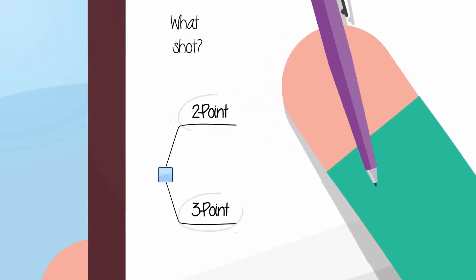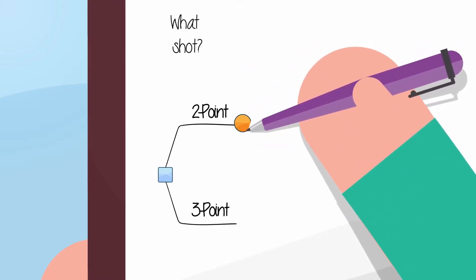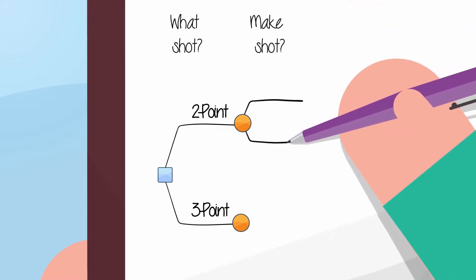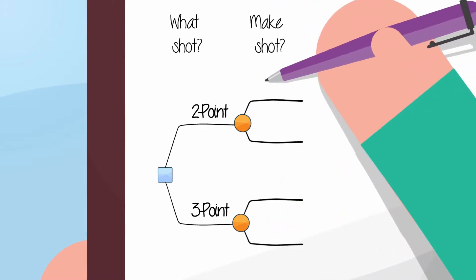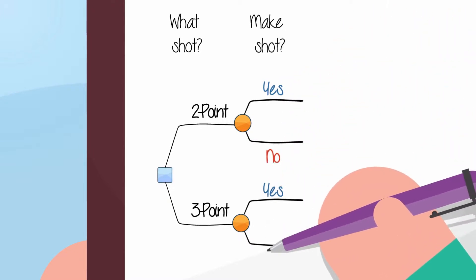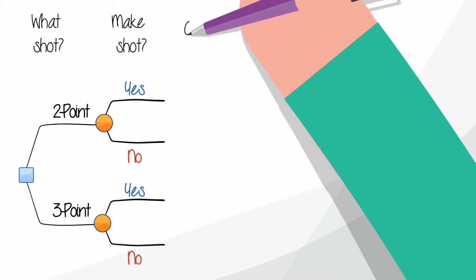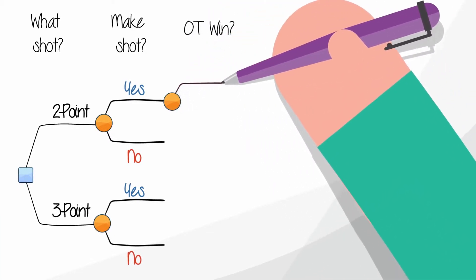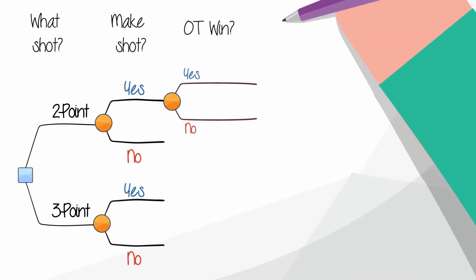In either case, you don't know whether you'll make the shot. Draw a circle to represent the uncertainty. And lines coming from the circle represent possible outcomes. Since you can only make or miss the shot, you can label the outcomes on the tree as yes and no. Making a two-point shot results in another uncertainty. Will you win in overtime? So you add that to the two-point shot branch of our tree.